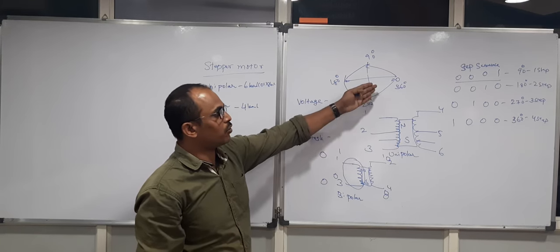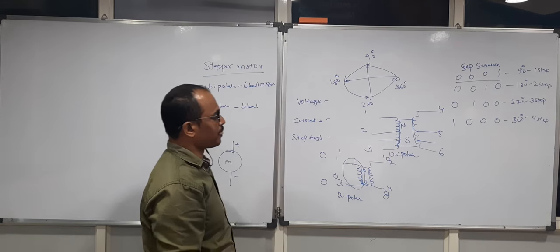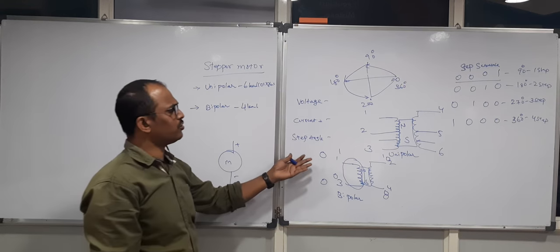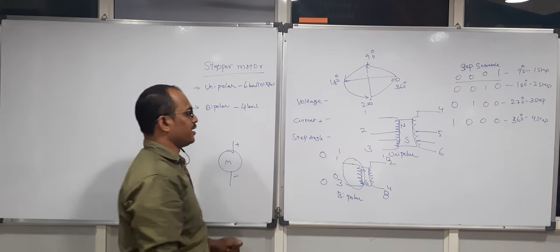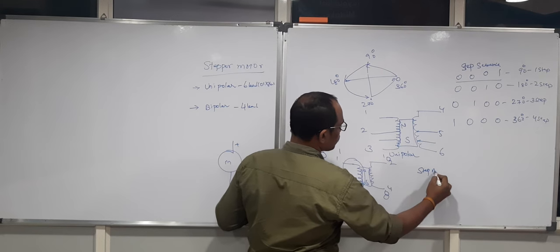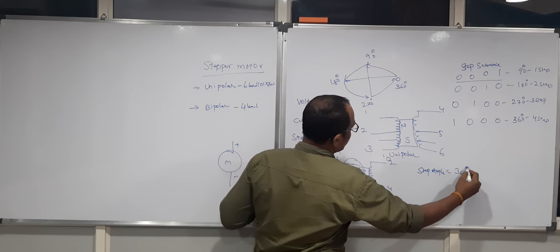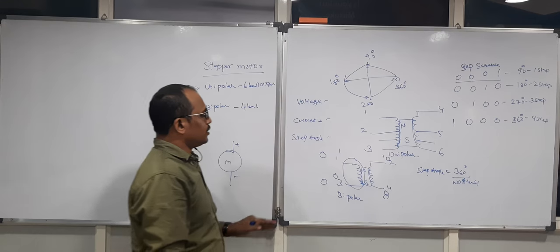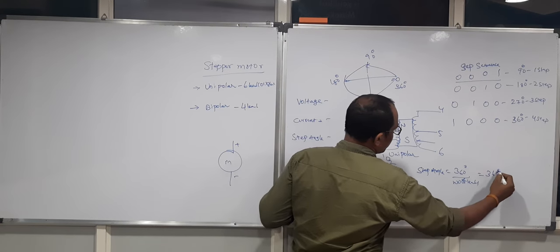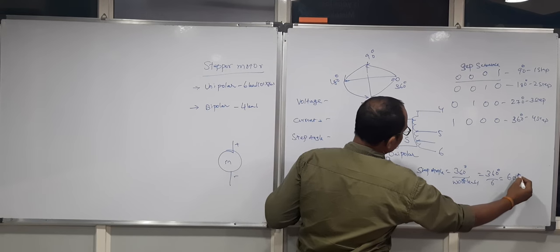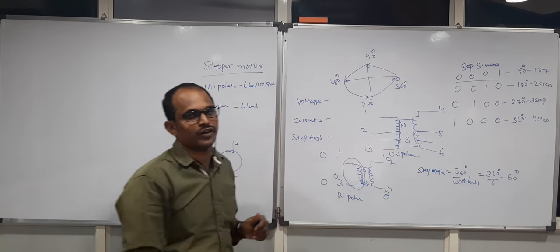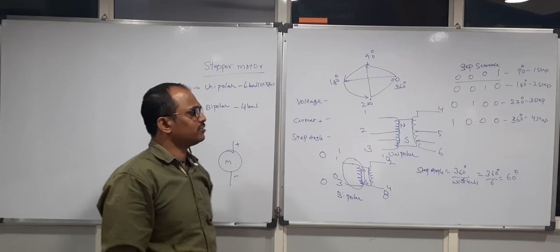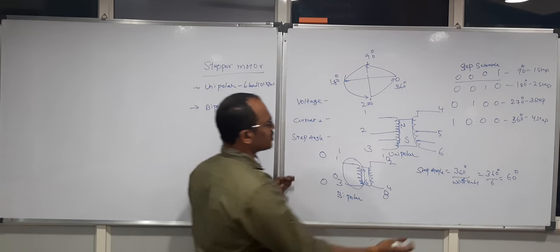Those are the 4 leads of the bipolar stepper motor. For unipolar stepper motors, the step sequence depends on the number of leads, and you can calculate the step angle with the formula: 360 degrees divided by number of leads. For example, with 6 leads you get 60 degrees per step, and with 8 leads you get 45 degrees per step. So more leads means a smaller step angle.